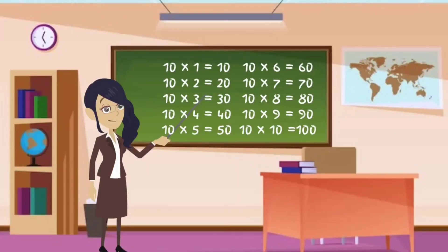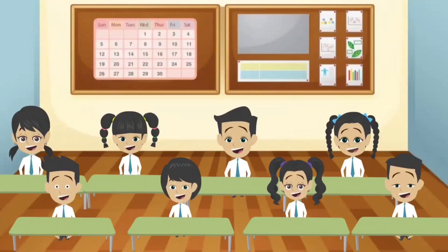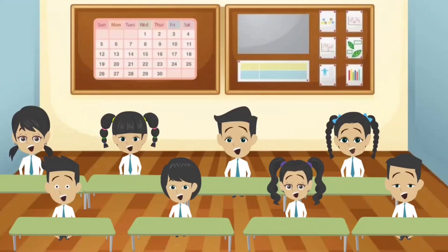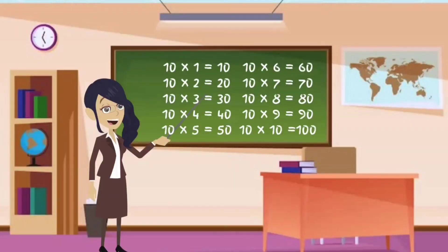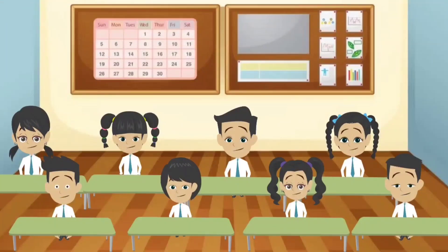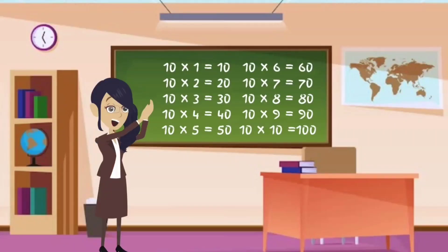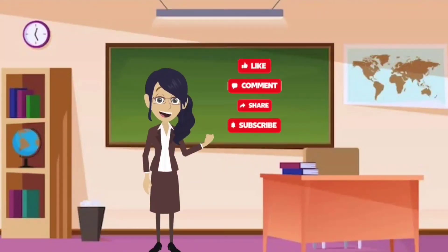Let's do this again together. 10 ones are 10. 10 twos are 20. 10 threes are 30. 10 fours are 40. 10 fives are 50. 10 sixes are 60. 10 sevens are 70. 10 eights are 80. 10 nines are 90. 10 tens are 100. Thank you.